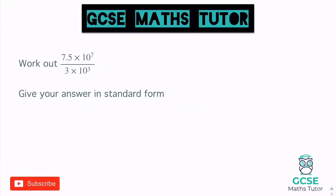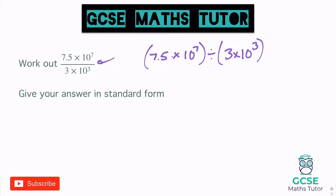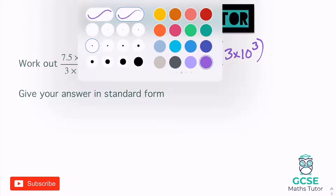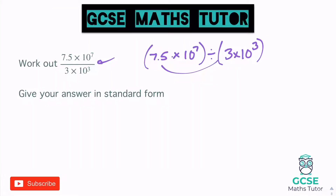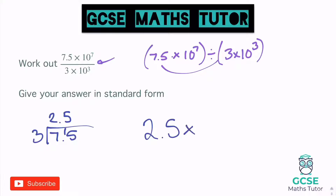Last question: 7.5 times 10 to the 7 over 3 times 10 to the 3. The fraction line just means divide. We need 7.5 divided by 3. Using the bus stop method: 3 into 7 goes twice remainder 1, carry the decimal, 3 into 15 goes 5. So 7.5 divided by 3 is 2.5. Powers: 7 take away 3 equals 4. Final answer: 2.5 times 10 to the 4.